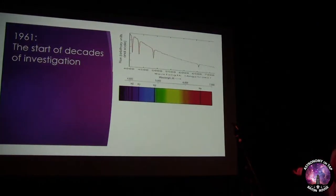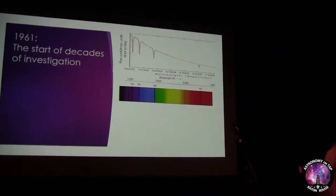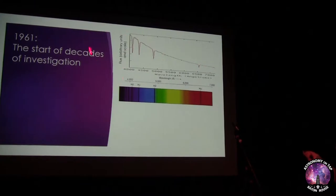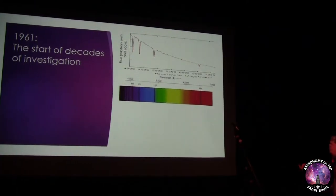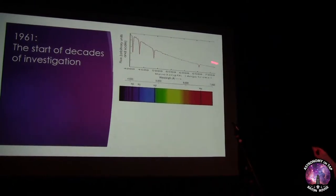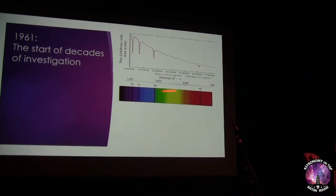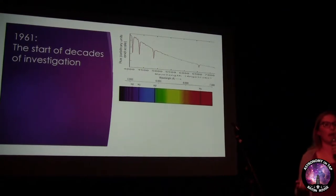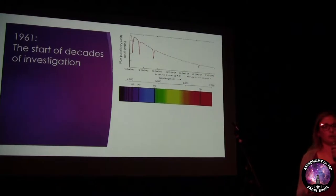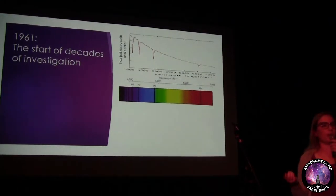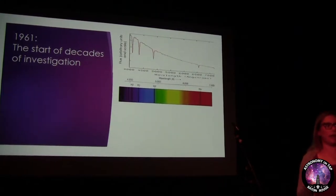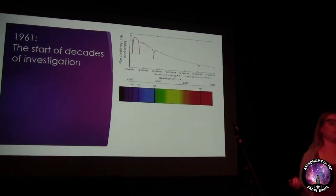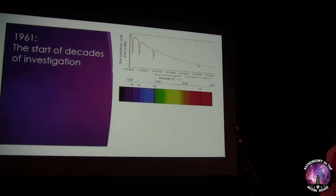What he's looking at is a spectrum. A spectrum is basically a diagram where we look at flux — the amount of light — versus wavelength. We look at wavelength because it tells us what kind of light we're looking at: UV light, X-rays, visible light. Each wavelength corresponds to a different type of light.